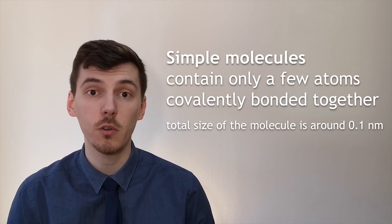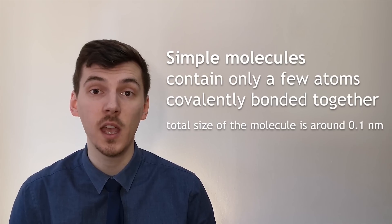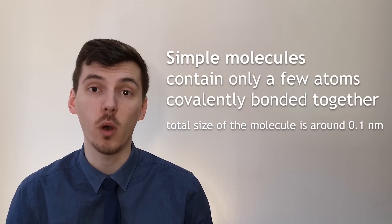Simple molecules are only made up of a few atoms and are typically around 0.1 nanometers in size. Just like for ionic bonding, we can draw dot and cross diagrams to show what's happening with the electrons in covalent structures.